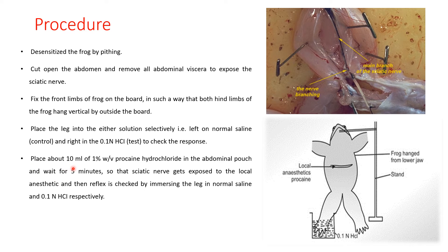Now place about 10 ml of 1% weight by volume procaine hydrochloride in the abdominal pouch. We have to put the local anesthetic here through the pouch and wait for 5 minutes so that the sciatic nerve gets exposed to the local anesthetic. Then the reflex is checked by immersing the leg in normal saline and 0.1 normal HCl respectively.